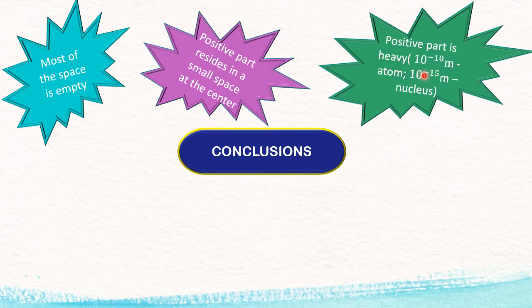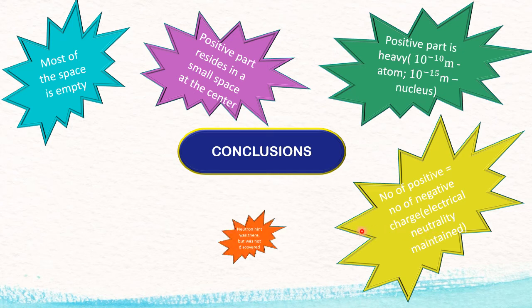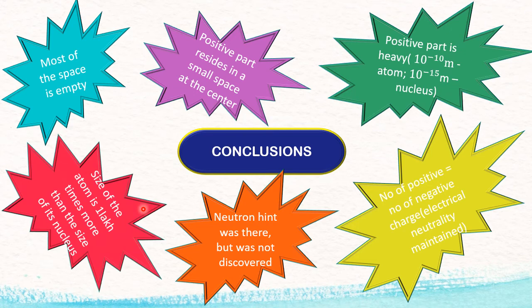Fourth conclusion: number of positive charges equal to number of negative charges. That means electrical neutrality is maintained. Thomson told the same thing, so some points of Thomson are carried here. Atom is electrically neutral. Number of protons are equal to number of electrons. Number of negative charges equal to number of positive charges. All these are maintained here. Neutron hint was there during that time, but hint, it is hint. It was not discovered, it was discovered later. Idea was there, but it was not discovered. Size of the atom is one lakh times more than the size of its nucleus. Same football and stadium comparison.